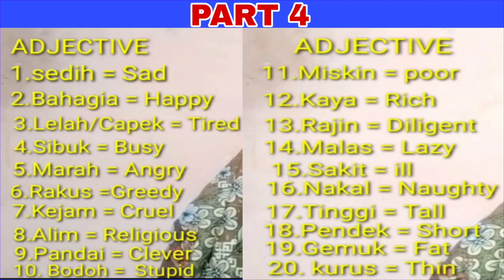Melanjutkan part keempat: miskin – poor, kaya – rich, rajin – diligent, malas – lazy, sakit – ill, nakal, mati, tinggi – tall, pendek – short, gemuk – fat, kurus – thin.